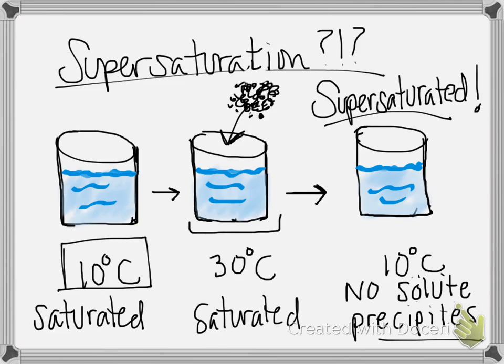So again, if I can take that saturated solution, raise it to a higher temperature, add more solute, make it saturated again but with a higher amount of solute, and then cool it back to its original temperature without any solute precipitating out, we now, ta-da, have a supersaturated solution.